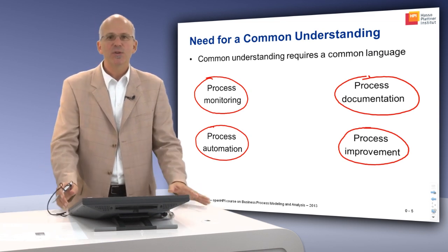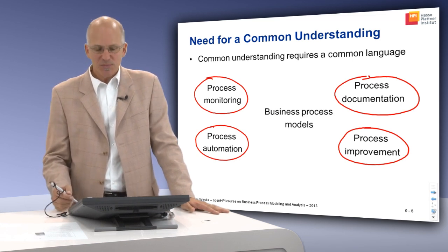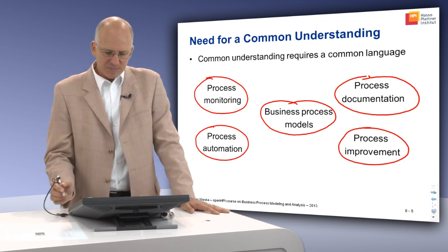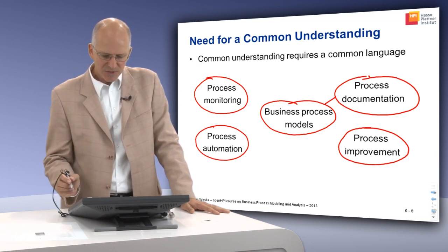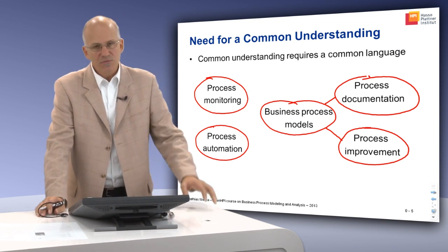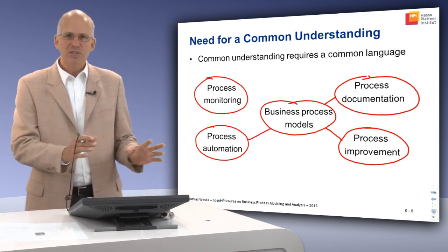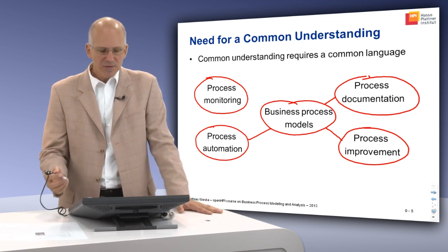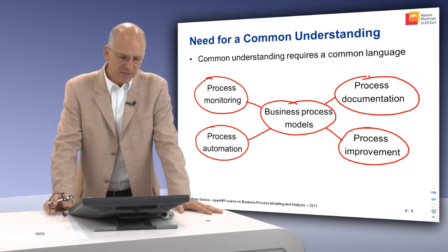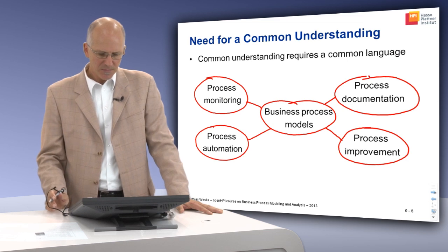So these are the main activities. The question is: what is the common language for people working on these activities? In my view, this is business process models — really at the center of this picture. Using business process models, you can do process documentation, discuss ways to improve the process with partners from different roles, discuss with the IT department which parts to automate, and also discuss process monitoring — what activities to measure and which decisive points to monitor at runtime.